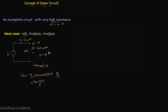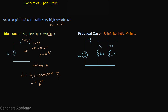Now let's look at the practical case. For the practical case, the resistance across an open circuit is infinite — like the ideal case. The current through the open circuit is zero amperes — like the ideal case. However, in this case the voltage across the open circuit will be finite.